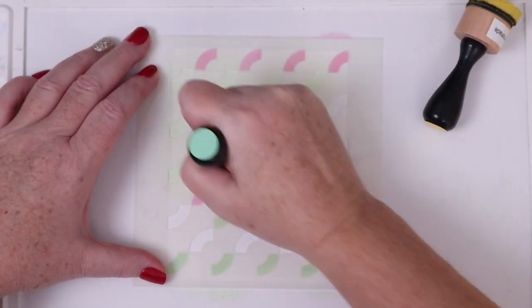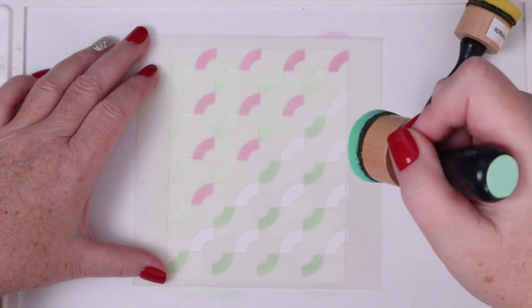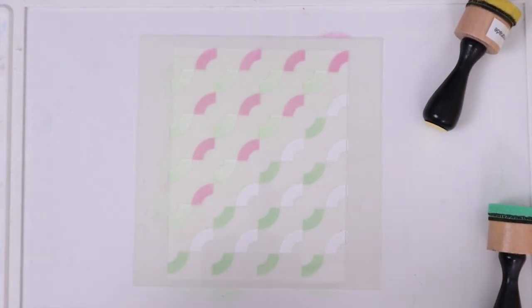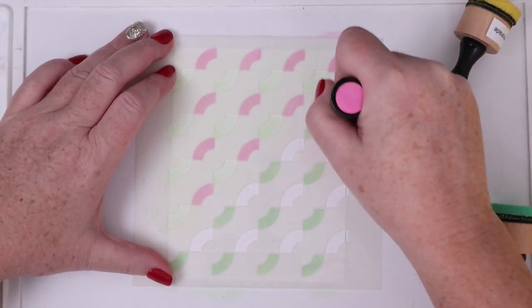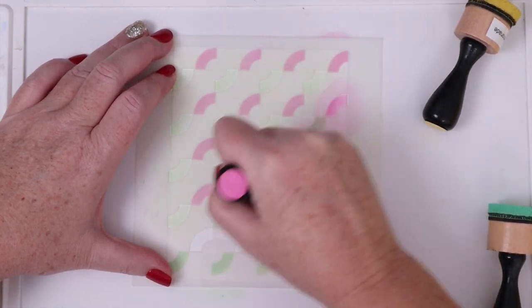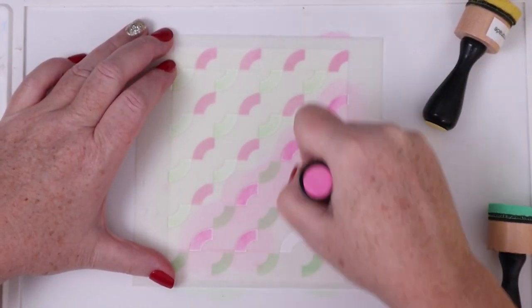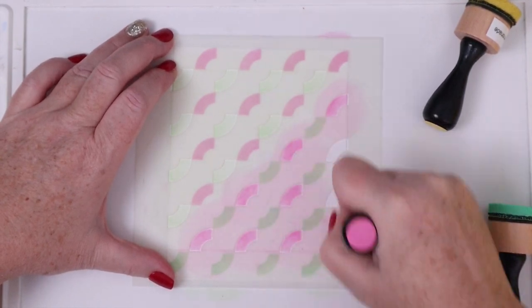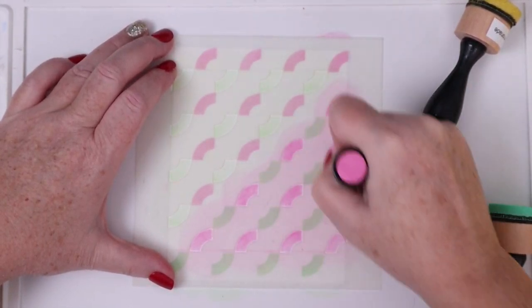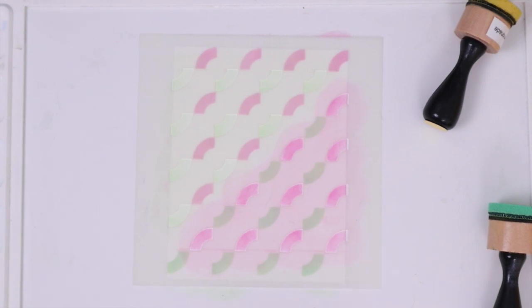Again, the bottom right arcs are going to be green, so I covered all of them up with Cracked Pistachio. The top left arcs are Picked Raspberry. So basically stencil number two in its first position is flipped where I needed to fill in green at the top of the card and pink at the bottom of the card.